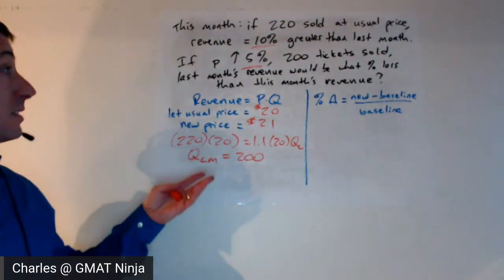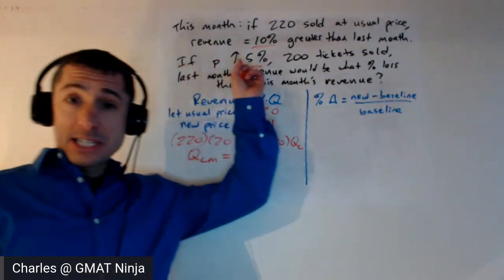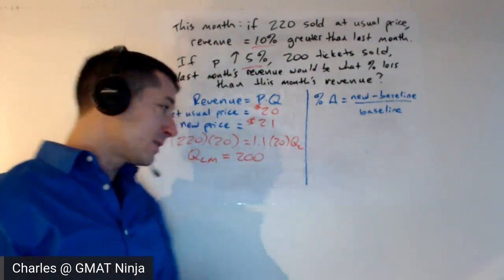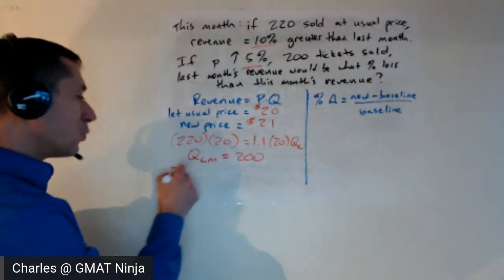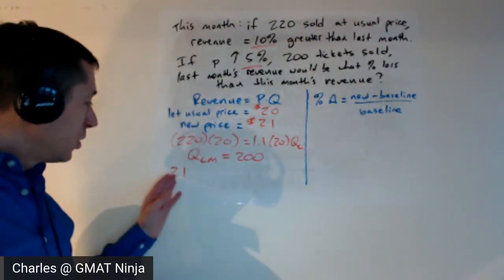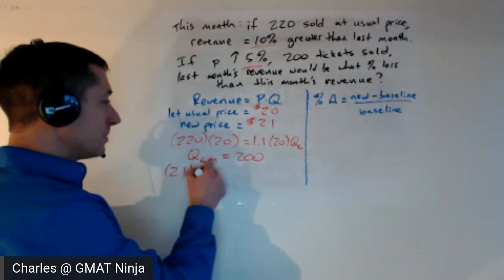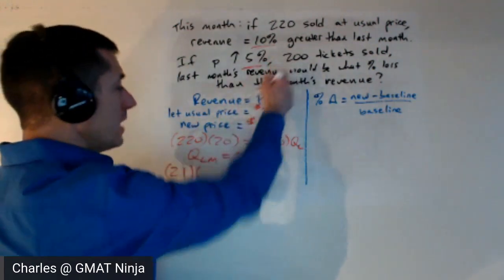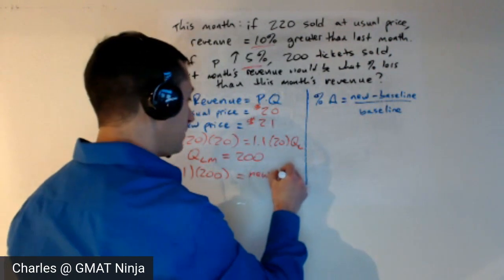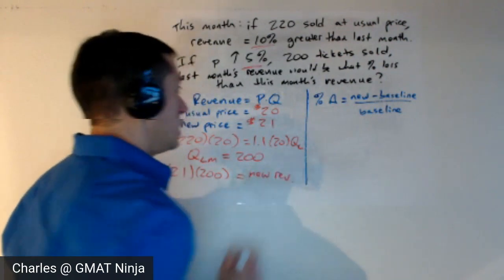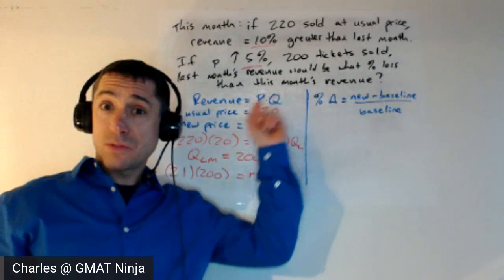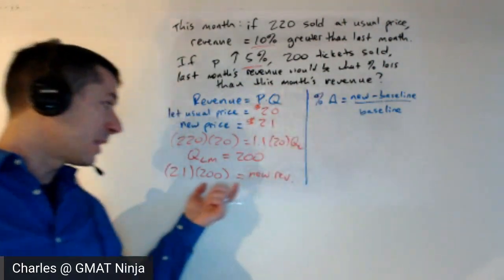Great. So now if we raise the price by 5%, we're in the world of the new price of $21. Your new revenue this month is going to be $21 times 200 tickets sold. And there is your new revenue.